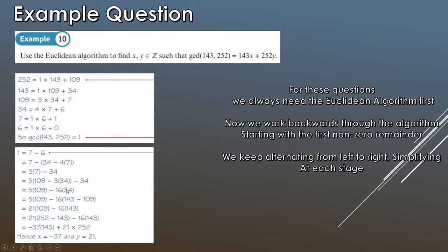Now we substitute for 34. Remember: we started with the right, went to the left, now we go right again. So 34 equals 143 minus 1 times 109. We substitute that in and do a bit of manipulation. We get 5 lots of 109 minus 16 times (minus 109), which gives us 16 lots plus 5 lots, giving 21 lots of 109. And we still have minus 16 times 143.